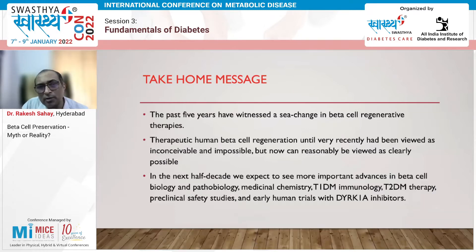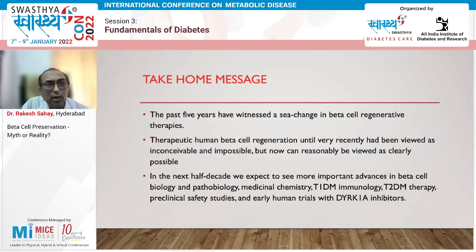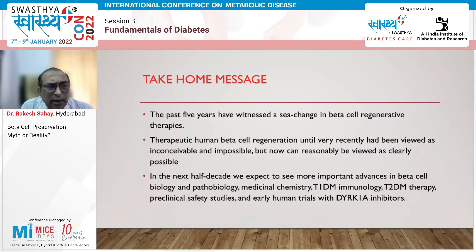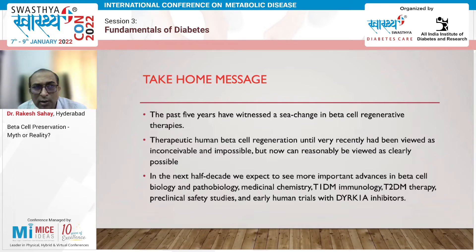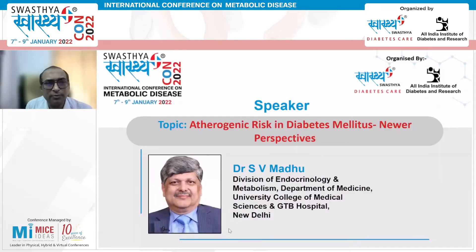In conclusion, the past five years have witnessed a sea change in beta cell regenerative therapies. Therapeutic human beta cell regeneration had previously been viewed as an inconceivable or impossible target, but now we can see it is reasonably possible to become an area of clinical use within the next half decade. We expect to see advances in beta cell biology, medicinal chemistry, type 1 diabetes immunology, and early human trials with DYRK1A inhibitors combined with GLP-1 analogues.